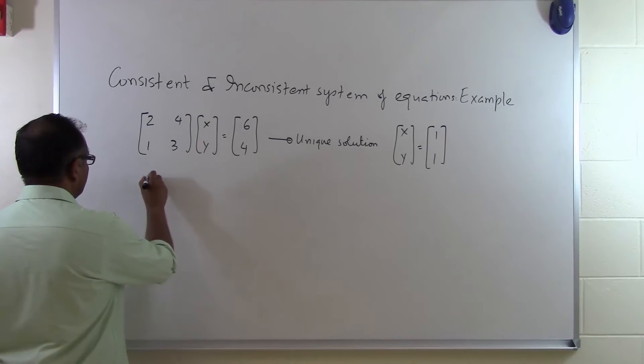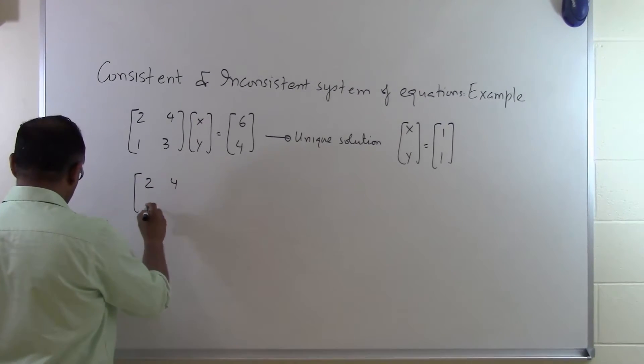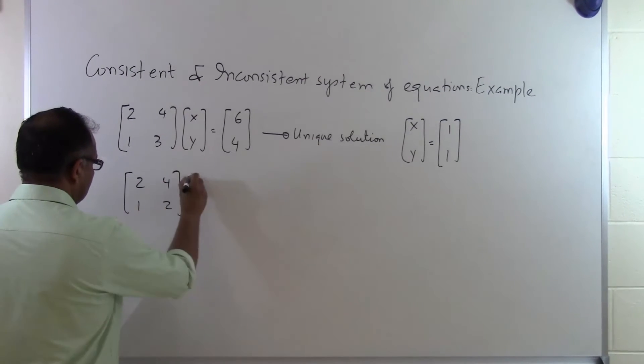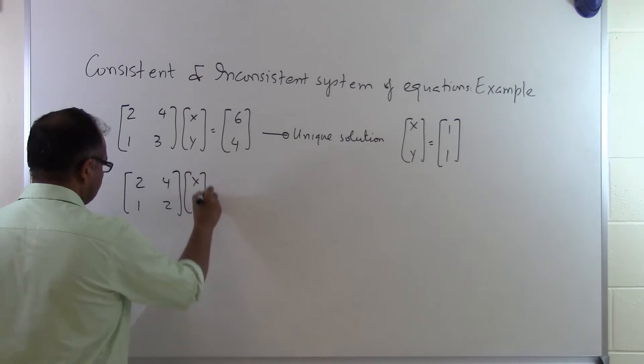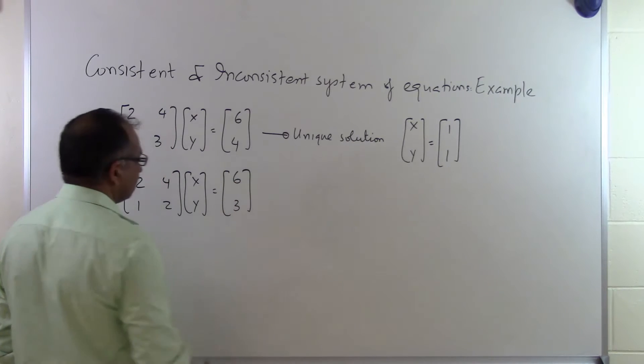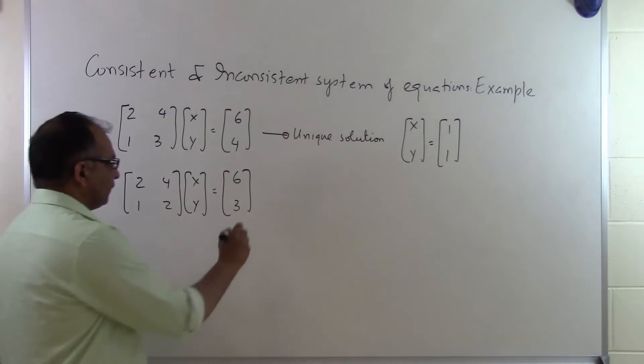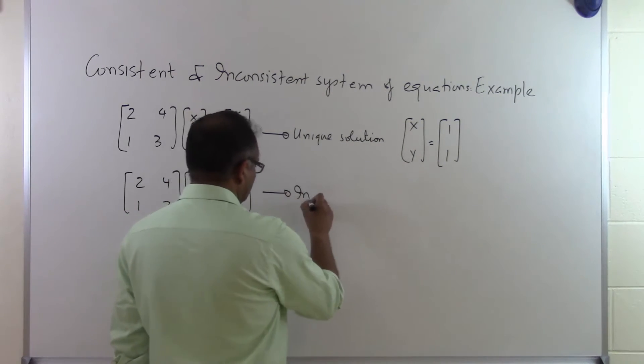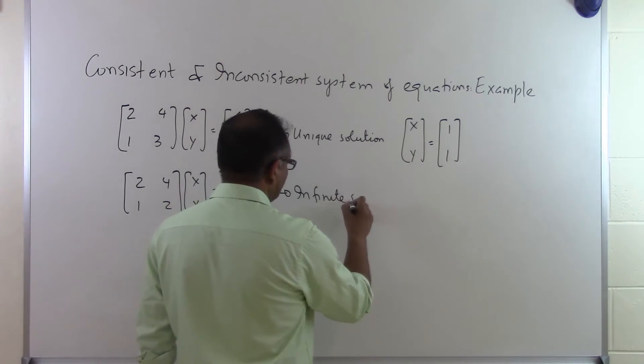Now if I look at this particular system of equations, the matrix [2, 4; 1, 2] times [x; y] equals [6; 3]. This one has infinite solutions.